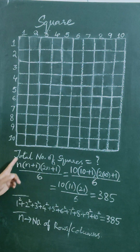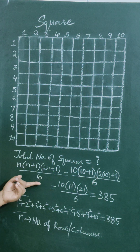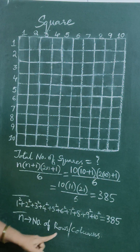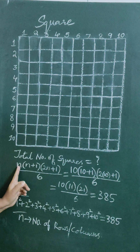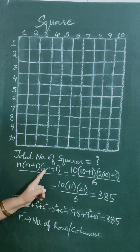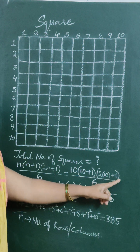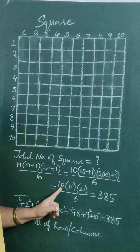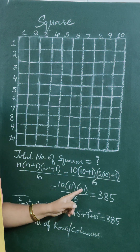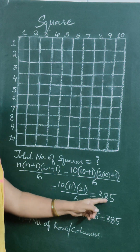We can also use the formula: n(n+1)(2n+1)/6. Here n equals 10. So it becomes 10 into 10 plus 1 into 2 times 10 plus 1, divided by 6. That is 10 into 11 into 21 divided by 6. After simplification you will get 385. This is the answer.